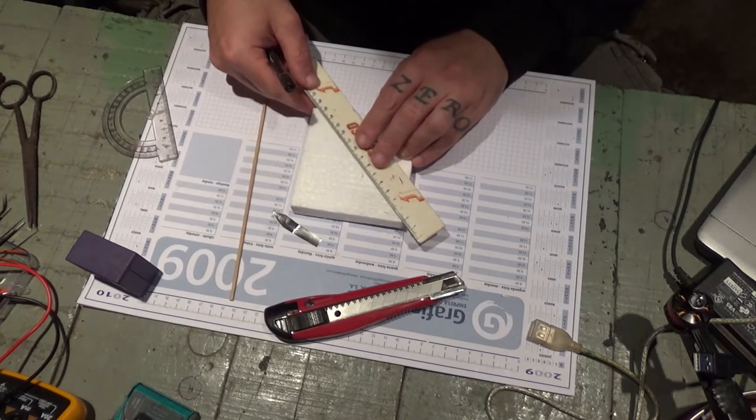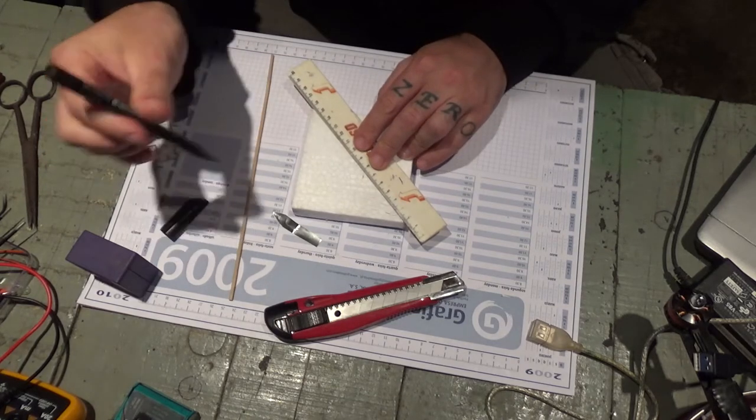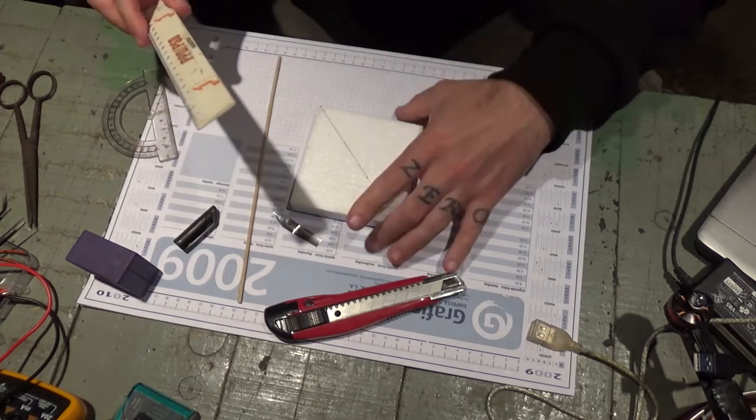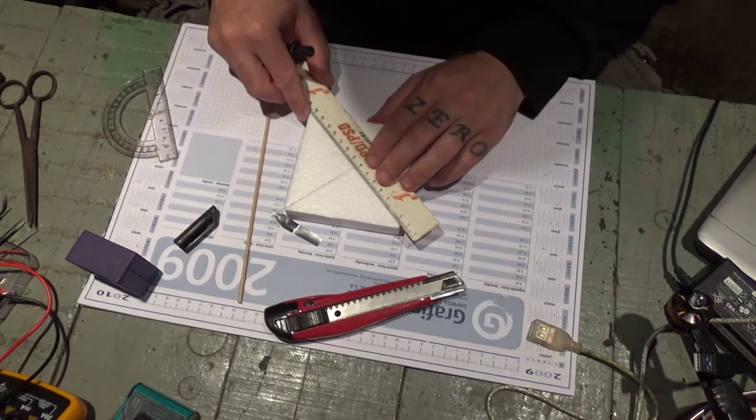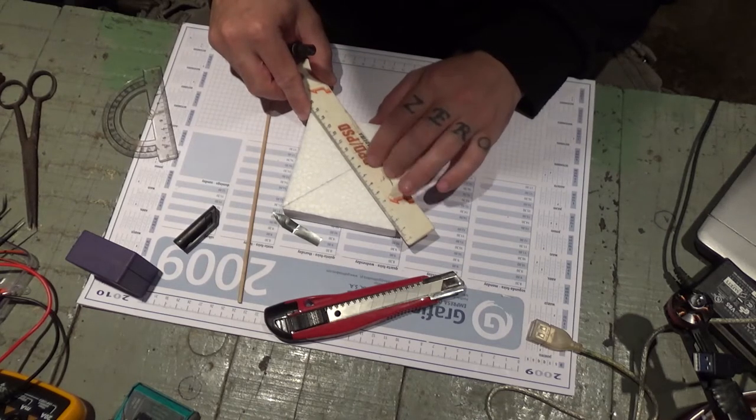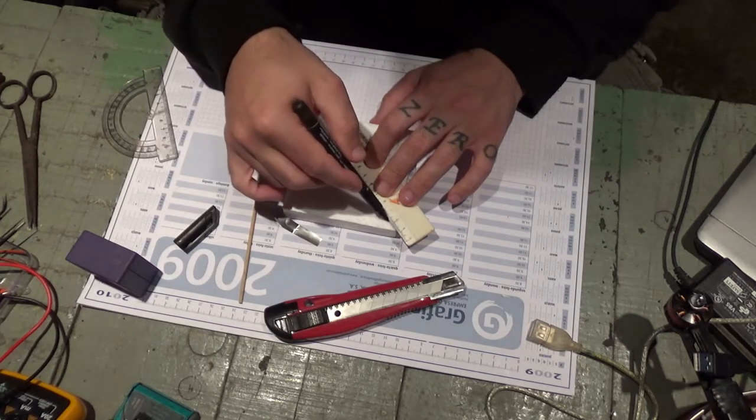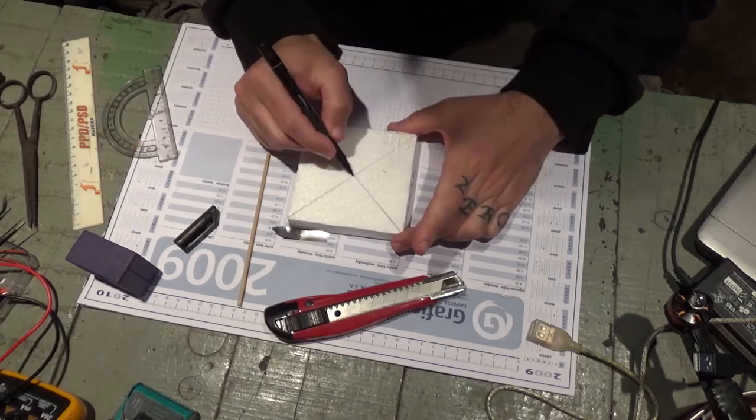So, you're gonna put it from side to side, and you're gonna draw a line. Then you're gonna go to two opposite corners, and you're gonna draw another line. And right now, you just found the middle point.